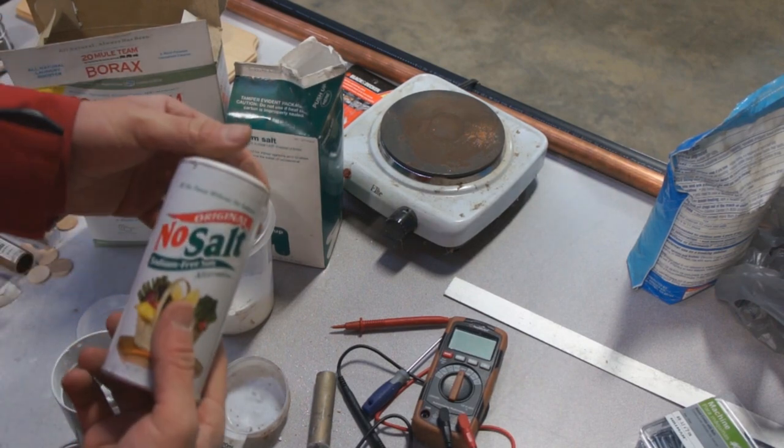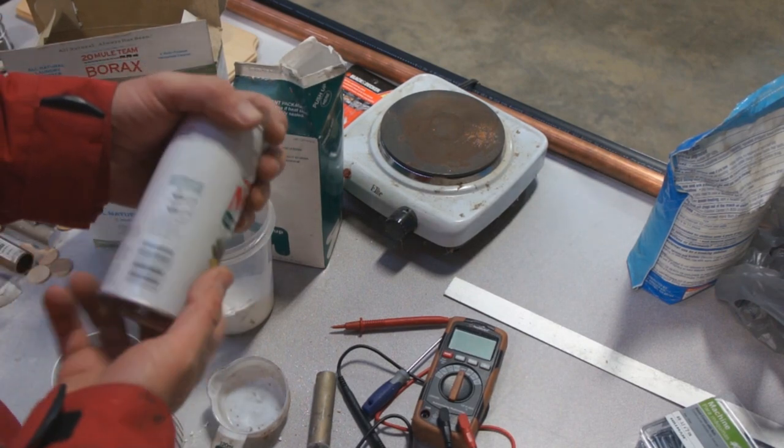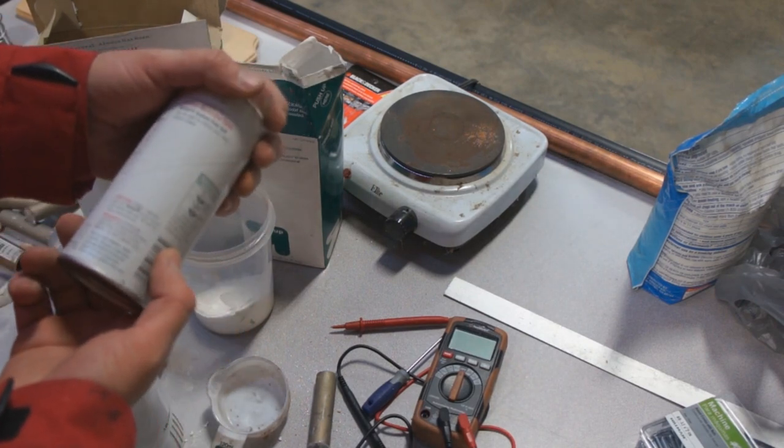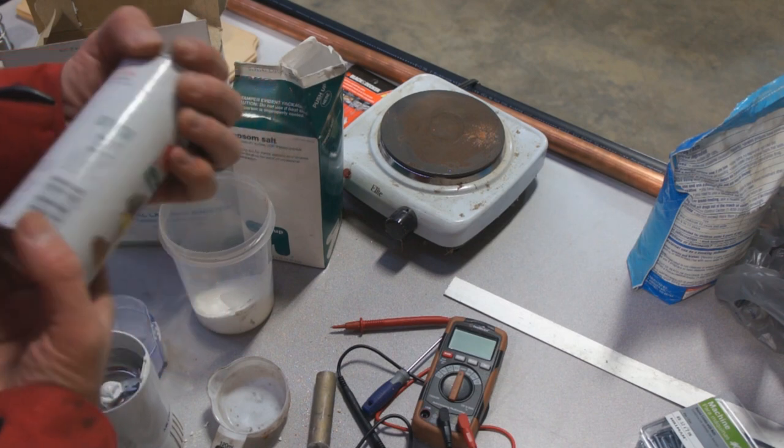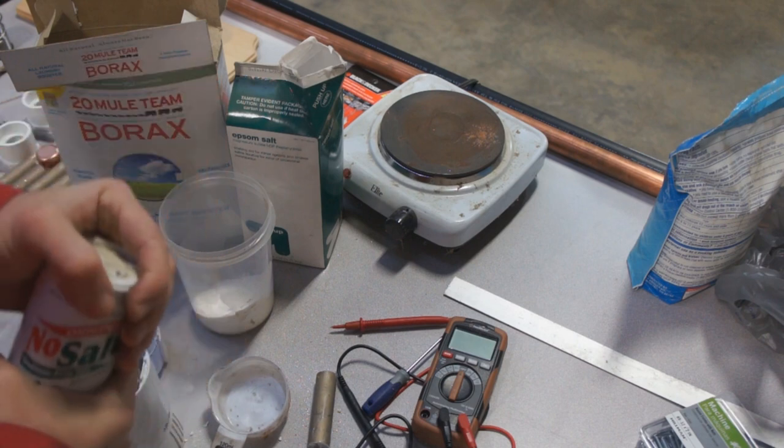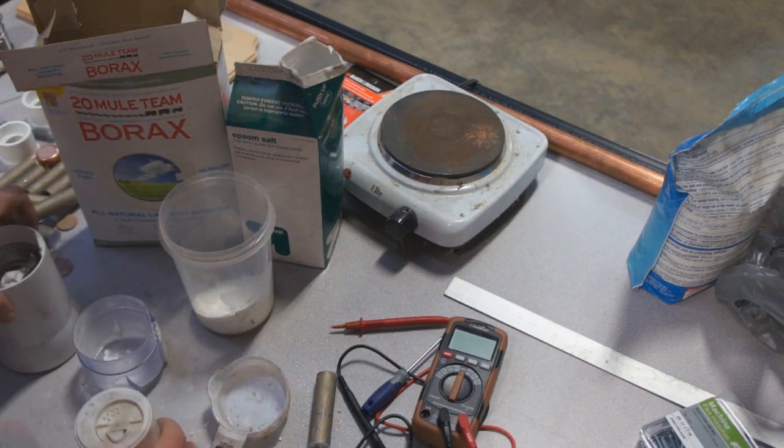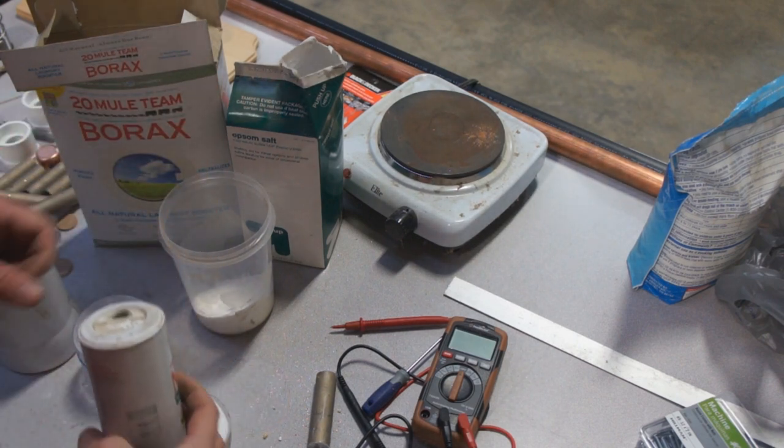Now a half cup of this no salt, sodium free substitute. If you look at the ingredients, this is potassium chloride and that's one of the main ingredients in this. So we'll put the potassium chloride in here, half a cup, that's about right.